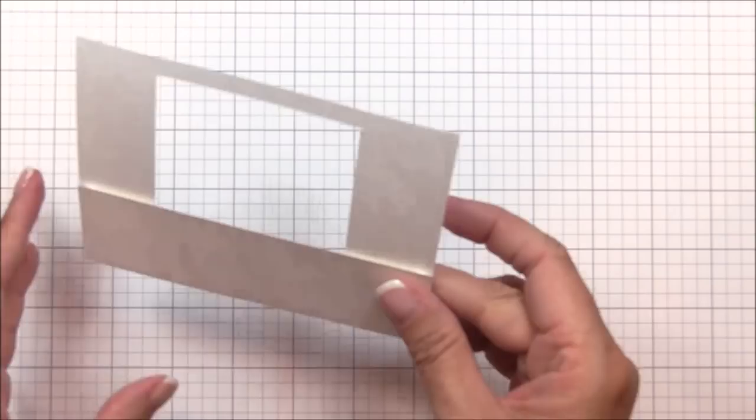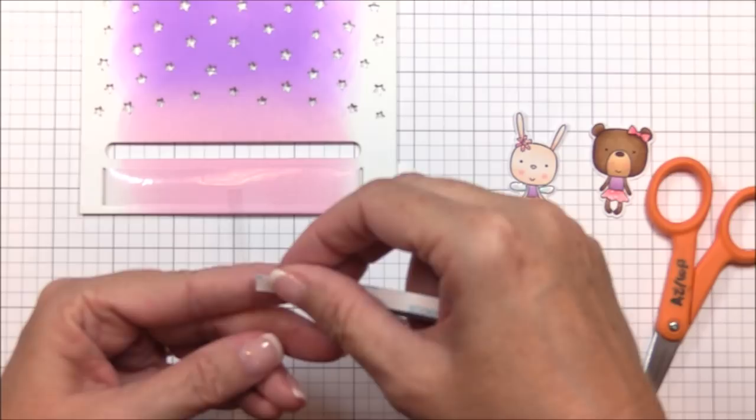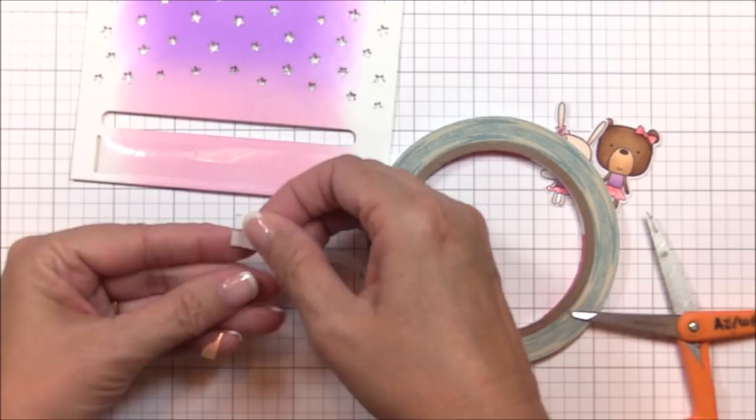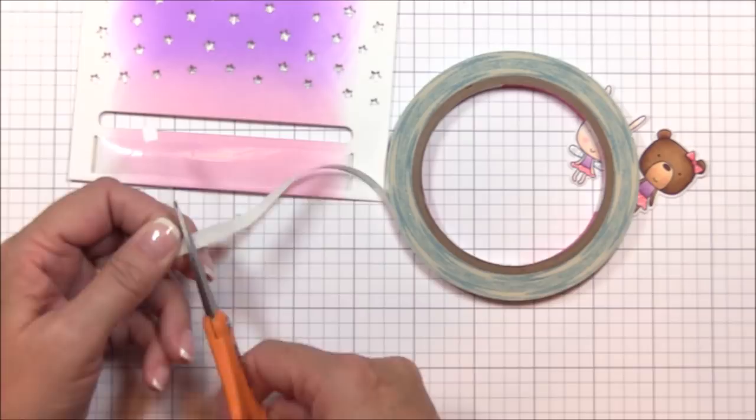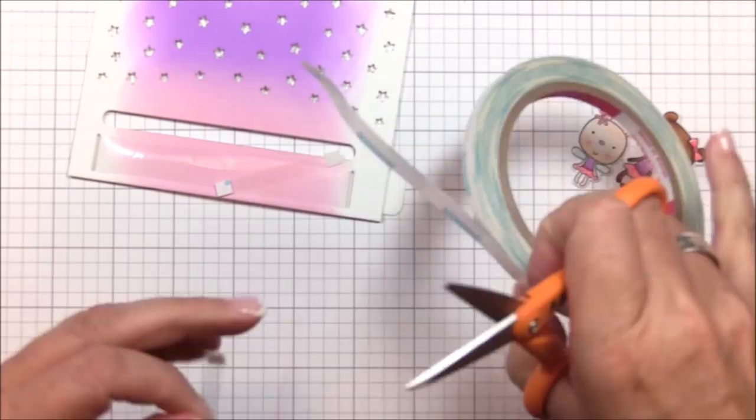Next, I've trimmed two pieces of acetate that measure a quarter inch by one and a half inches. This is what I'll attach to the loop and my critters to allow them to glide back and forth. I'm adhering a piece of quarter inch double sided tape to the top of each tab and then flipping them over and adhering another piece of quarter inch double sided tape to the bottom of the tab.